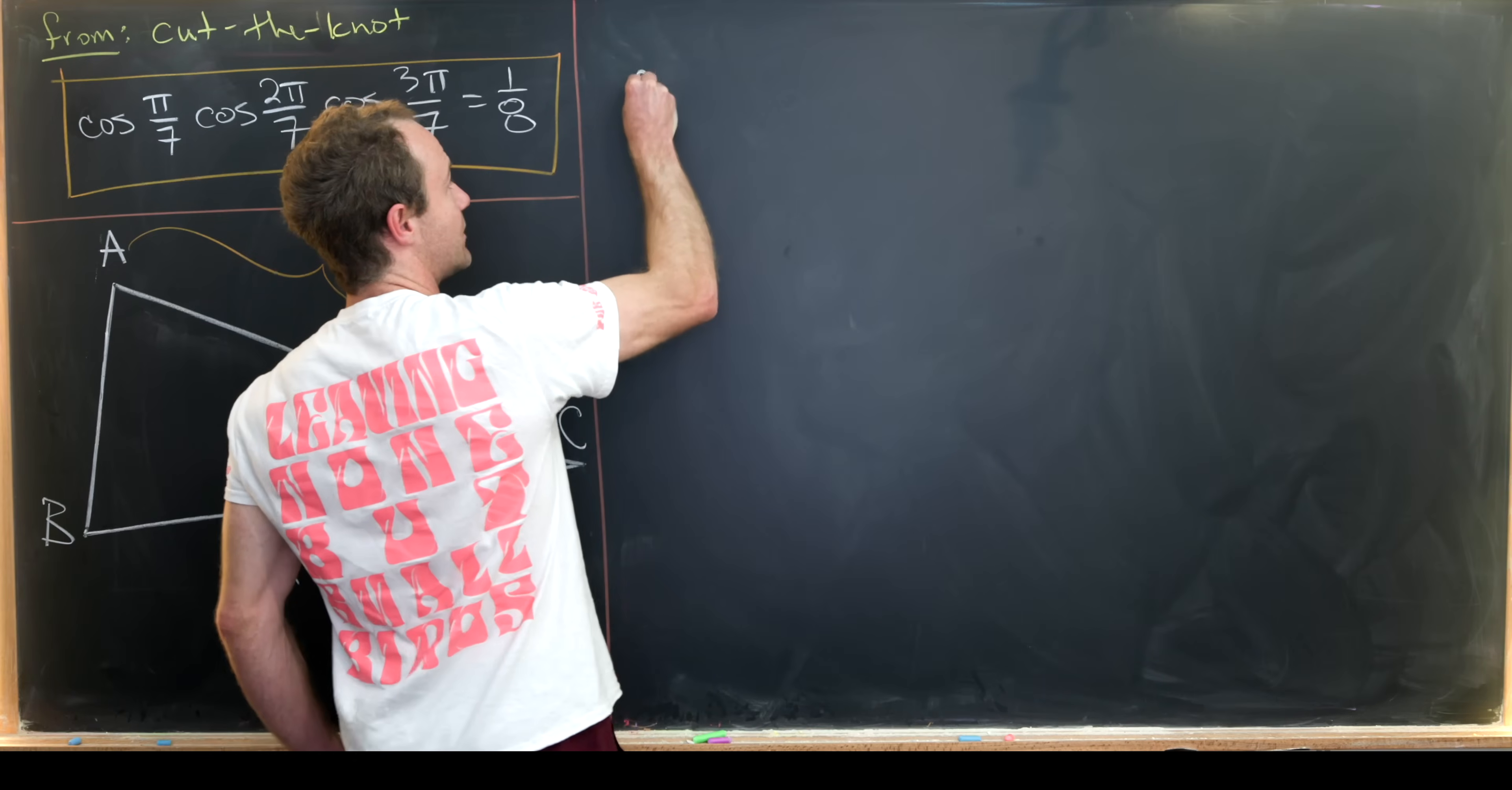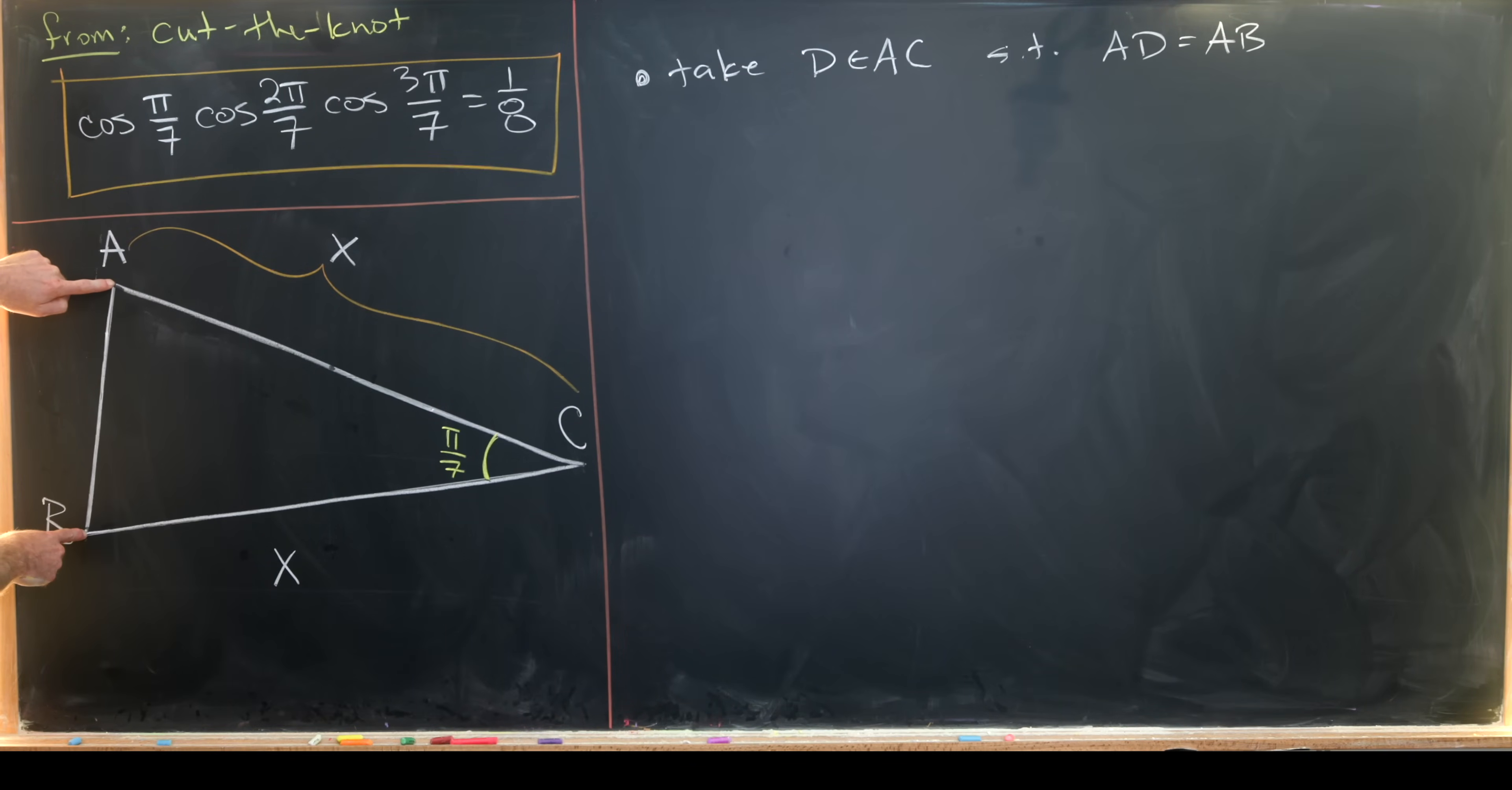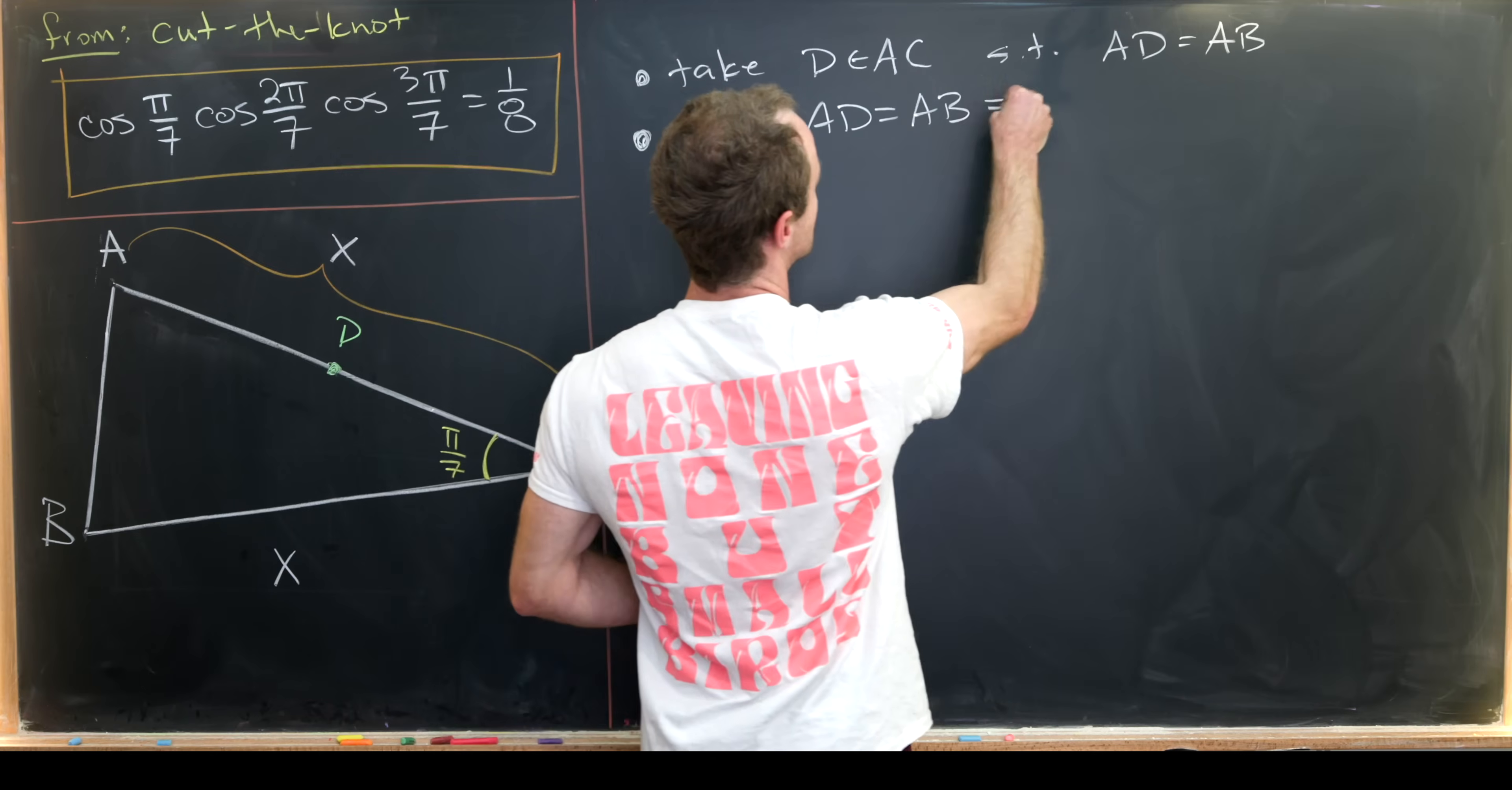So our first step will be to take a point D on line segment AC so that AD is the same thing as AB. So let's see how we can do that. So we can swivel this line segment up until it intersects AC. That'll intersect right about there. So there's our point D which is chosen so that AD and AB have the same length. And then we might as well set that equal to a unit length. So let's set AD equal to AB equal to 1.